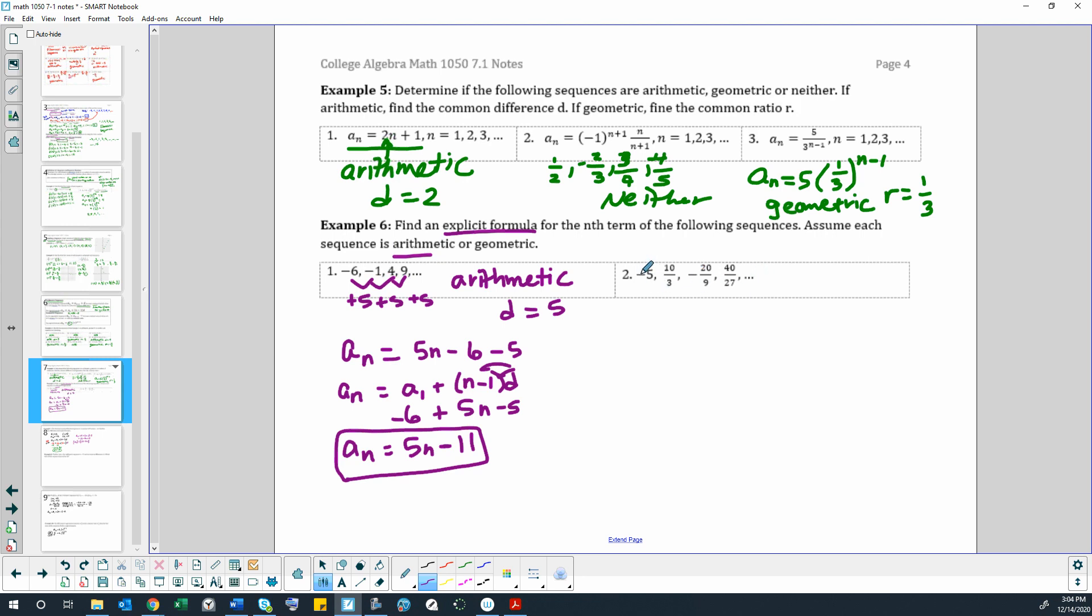This one, when I see the fractions, that immediately makes me think that it's probably a ratio that's happening here. So to find our ratio, we can take a term and divide by a previous term. If you want to check and make sure that they are all that same ratio, just go down to the next term and do the same thing. So if we have 10 thirds and we divide by negative 5, negative 5 goes into 10 twice, so that would be negative 2 because they're both negative, so that gives us negative 2 thirds.